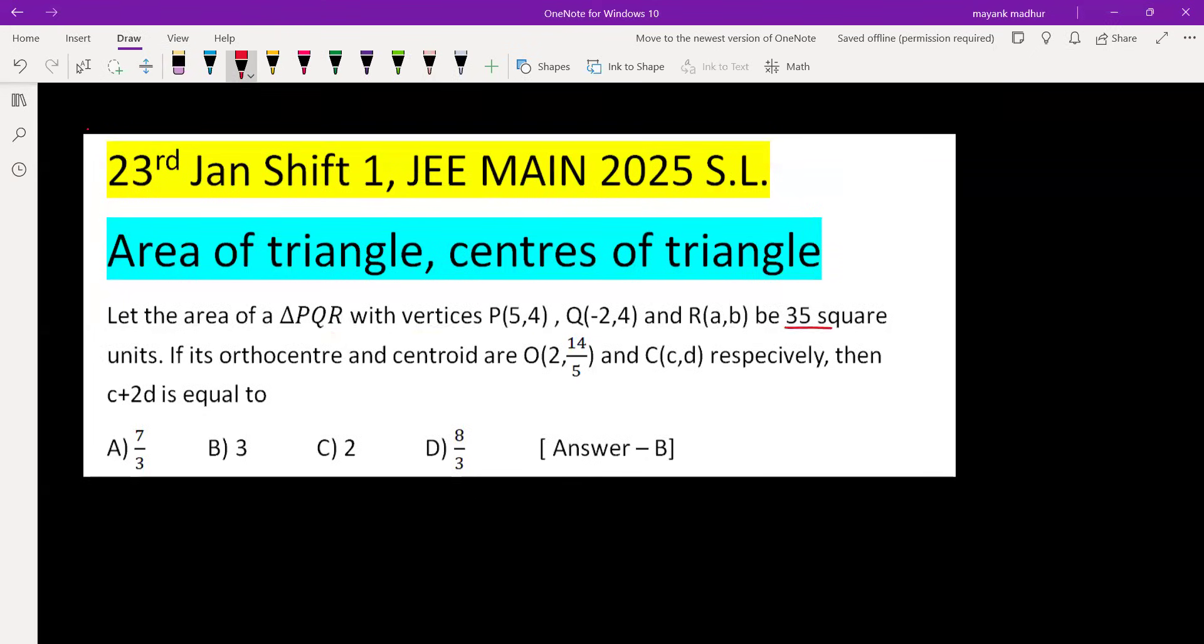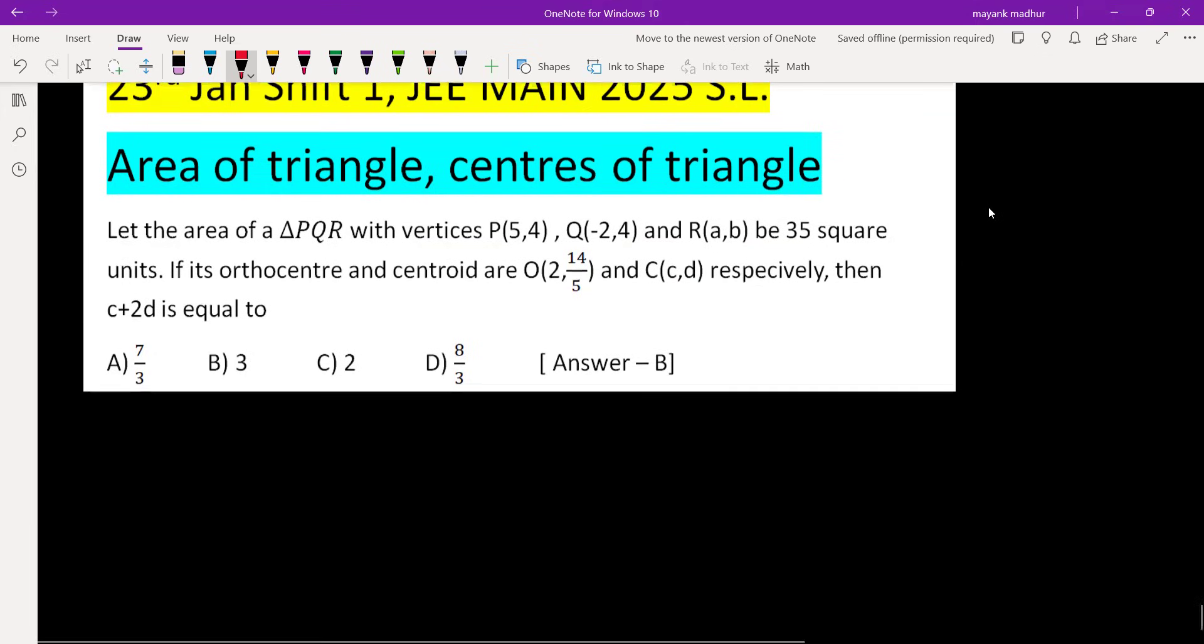Let triangle PQR with vertices P, Q, R have area 35 square units. The orthocenter and centroid are given, and we have to find the value of c plus 2d. What we can observe here...